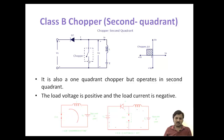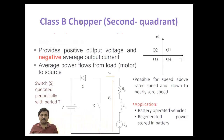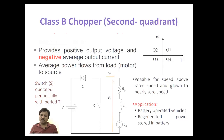There are two modes of operation: when the switch is closed and when the switch is off. Class B chopper is generally used for regenerative braking of the motor. It provides positive output voltage and negative output current, meaning average power flows from load to source. This is used for speeds above rated speed and near-zero speed conditions, and for battery applications.